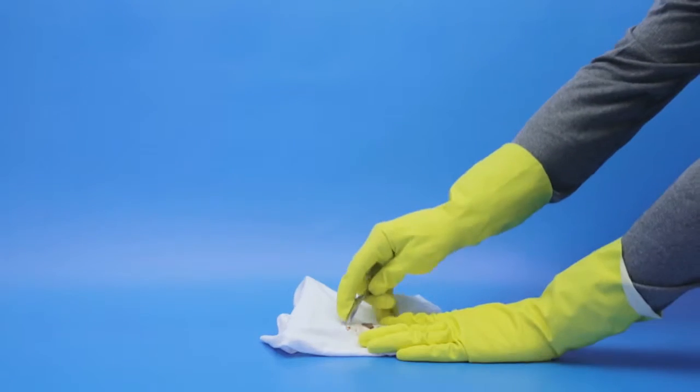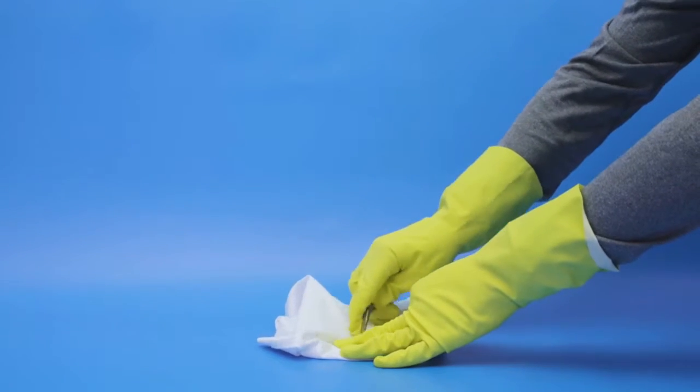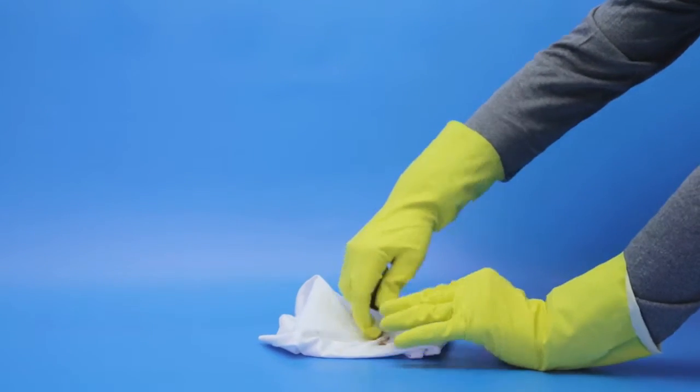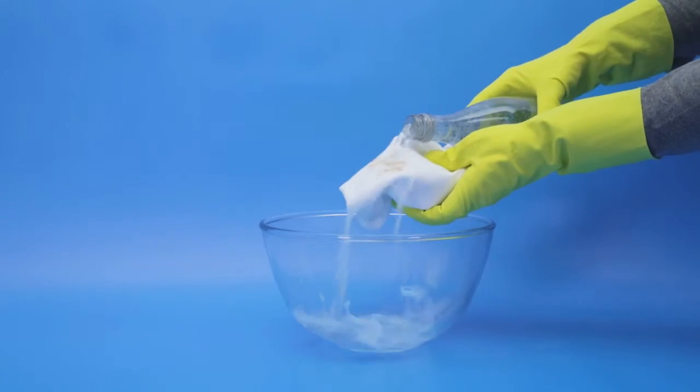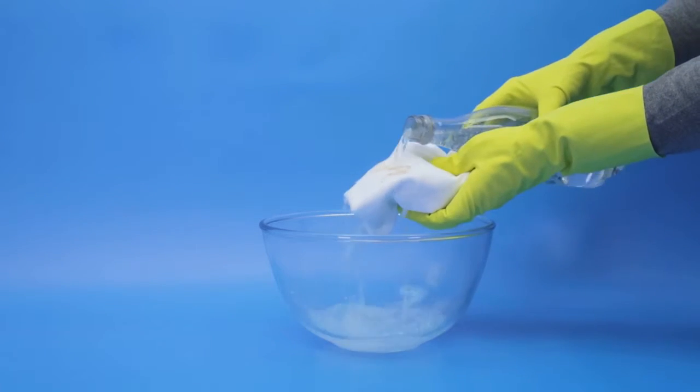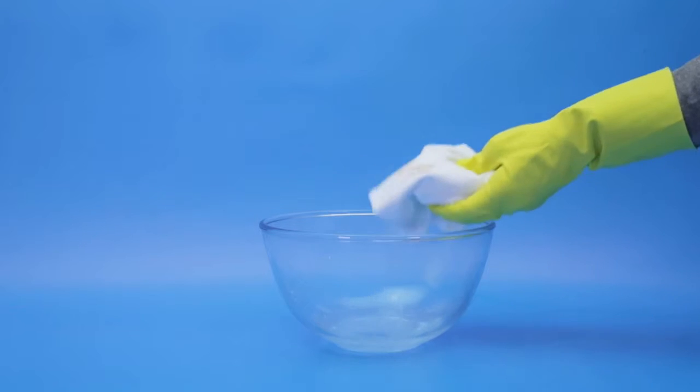Use a spoon to gently scrape or blot away any excess chocolate from the stain. Flush the back of the stained fabric with cold running water or soda water. Ideally hold the reverse of the fabric under the tap.